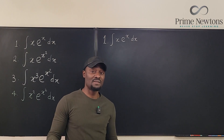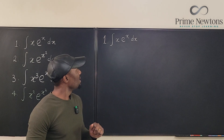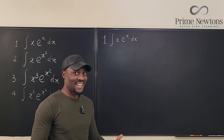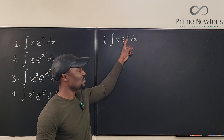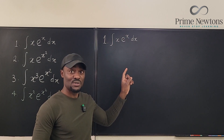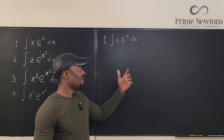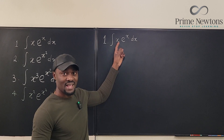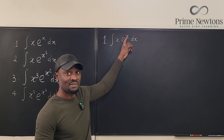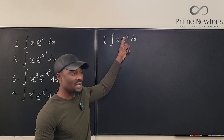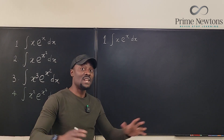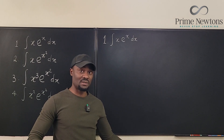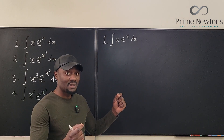If you're just beginning calculus, the first time you see this problem you might try a u-substitution. But as soon as you attempt it, you realize it won't work. If you make eˣ your u, its derivative is eˣ — it doesn't contain x. And if you make x your u, its derivative is 1, not x. So u-substitution definitely cannot be done here.